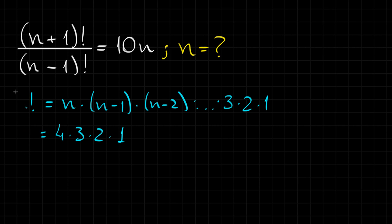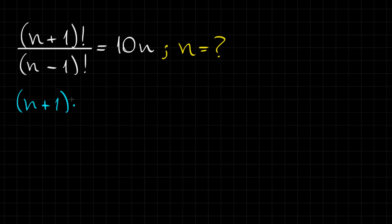So, I can take the (n+1) factorial, which is the numerator of our fraction in the left-hand side of this equation and we can do the following thing. We can do (n+1) times the number that comes before (n+1), which is n, right?